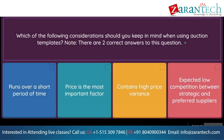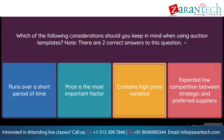Question: Which of the following considerations should you keep in mind when using auction templates? Note, there are two correct answers to this question. Option 1: runs over a short period of time. Option 2: price is the most important factor. Option 3: contains high price variance. Option 4: expected low competition between strategic and preferred suppliers.